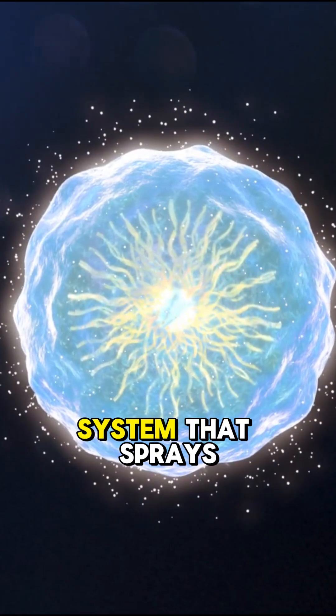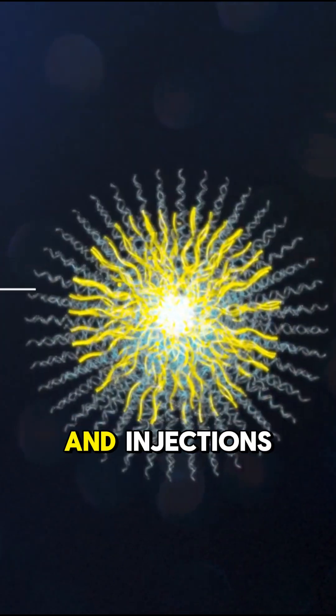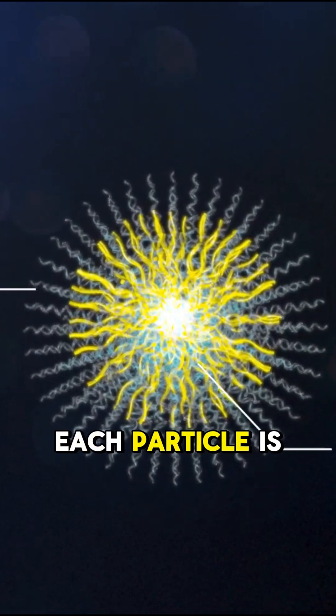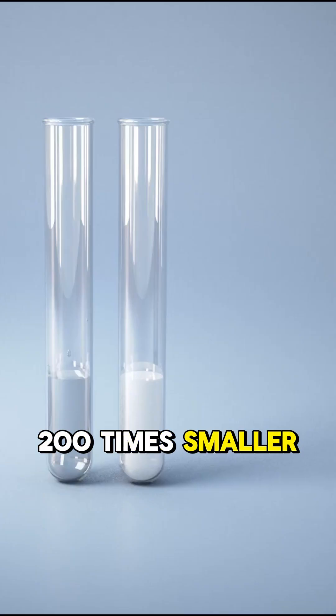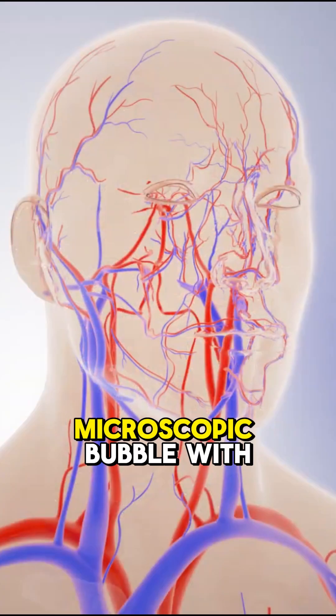Meet Nanocel, a drug delivery system that sprays into your cheek and outperforms pills and injections. Each particle is 200 times smaller than a red blood cell. Inside, a drug payload wrapped in a water-friendly shell—it's like a microscopic bubble with a mission.